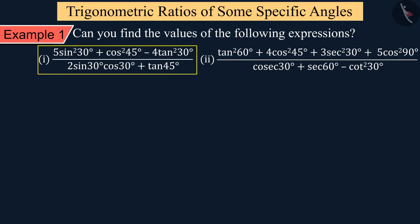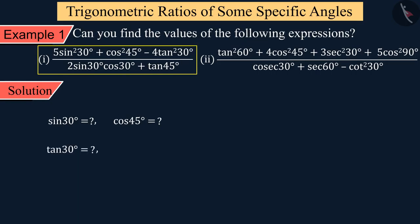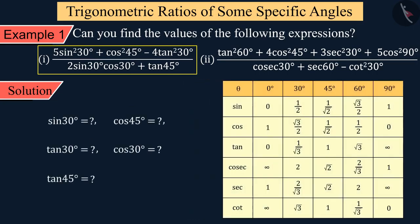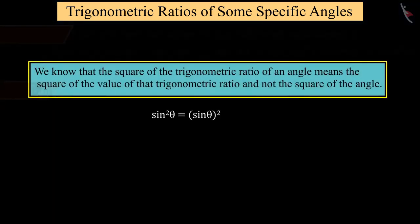To solve this we will need the values of sine 30°, cos 45°, tan 30°, cos 30°, and tan 45°. We get the values of all these with the help of the table of trigonometric ratios. We know that the square of a trigonometric ratio of an angle means the square of the value of that trigonometric ratio, and not the square of the angle.